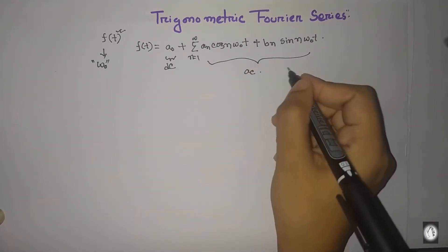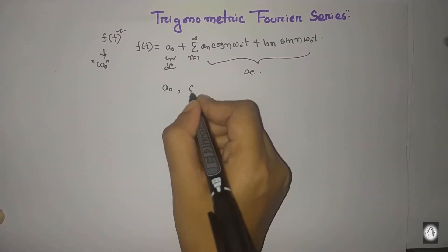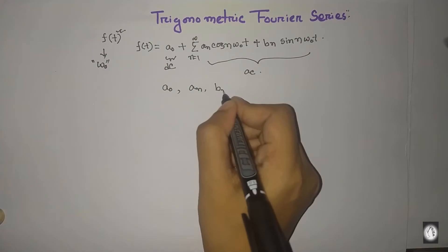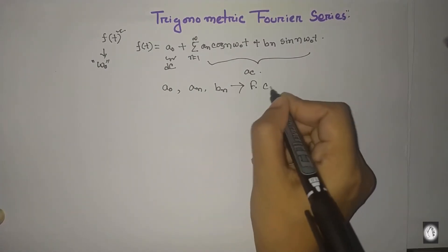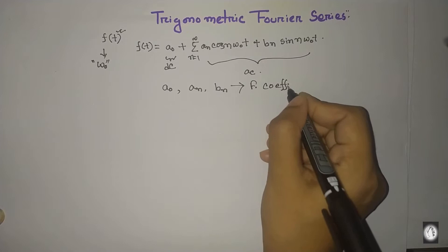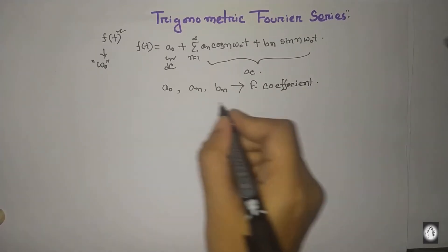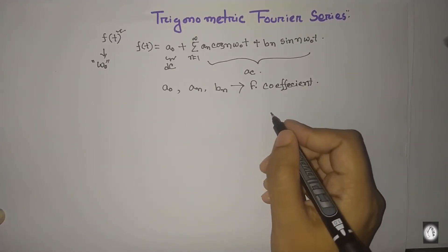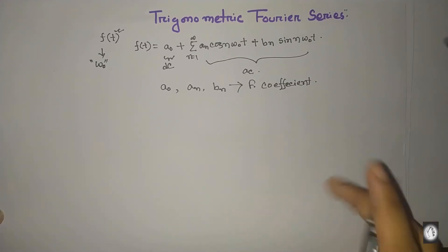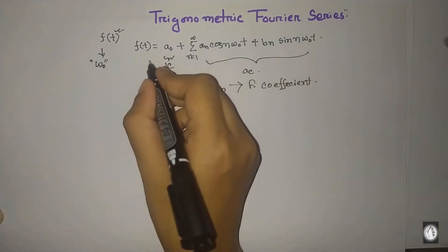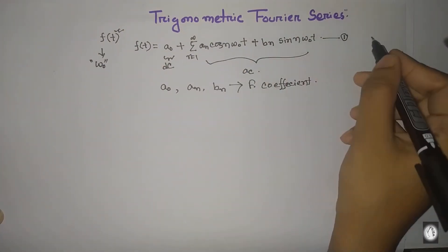This is the Fourier coefficient — this is the mathematical expression. So we can easily expand the Fourier series using these coefficients.